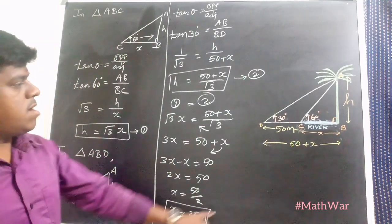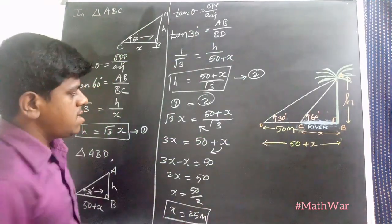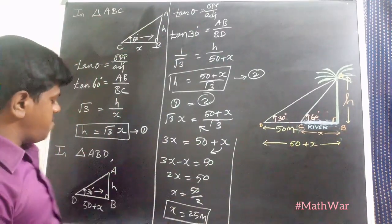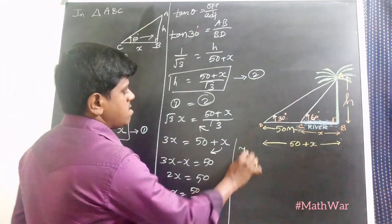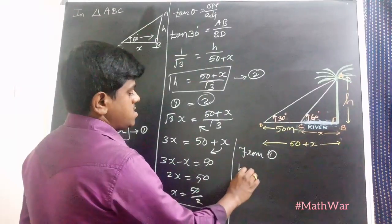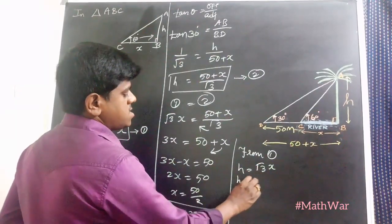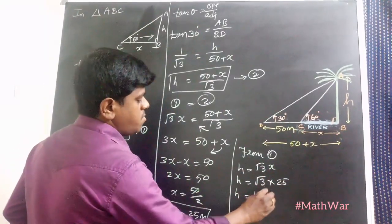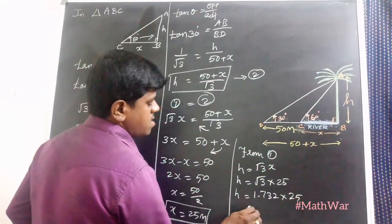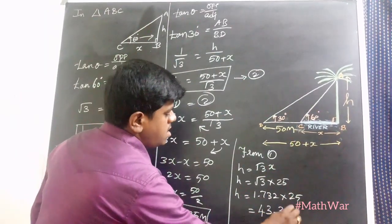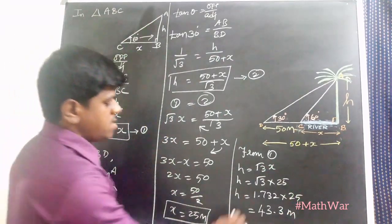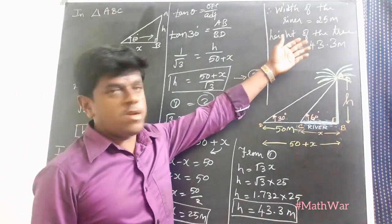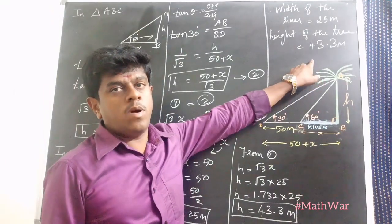X = 25 meters is the width of the river. From equation 1, H = √3 × X = √3 × 25 = 25√3 = 43.3 meters. Therefore, the width of the river is 25 meters and the height of the tree is 43.3 meters.